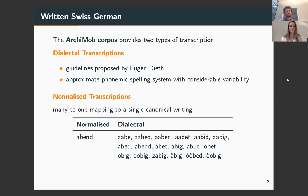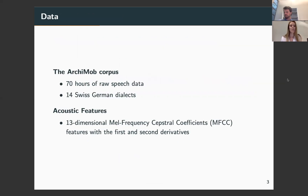Such normalization cannot be seen as translation, since the sentence structure always stays unmodified and only word writing is changed. The Archimob corpus consists of interview recordings with native speakers in 14 different Swiss German dialects, totaling approximately 70 hours of raw speech data. The data has been manually transcribed by native speaker annotators.